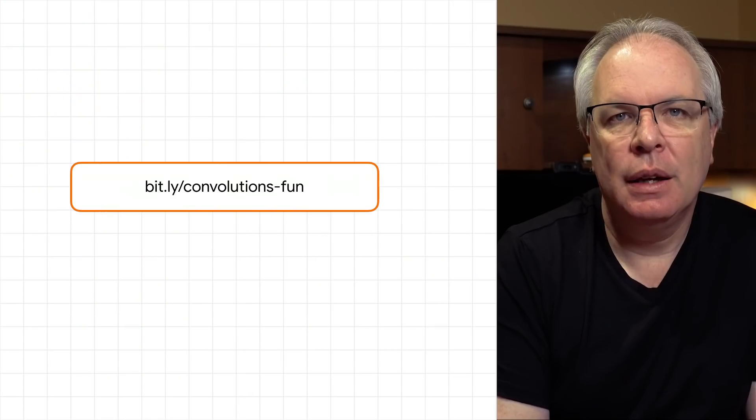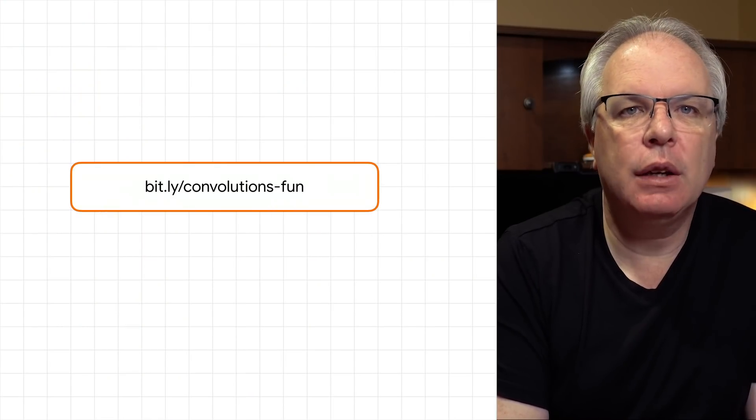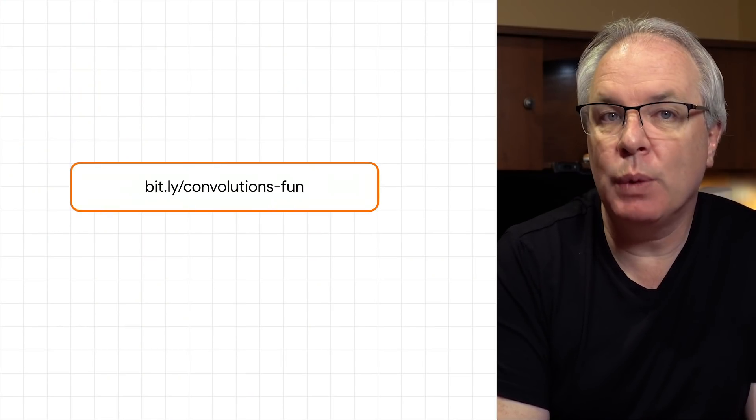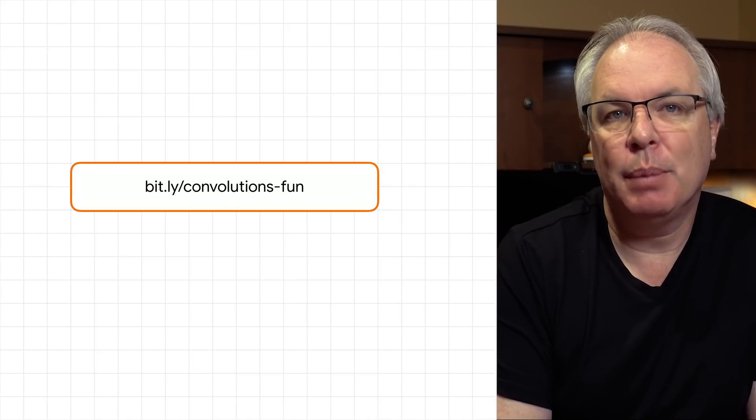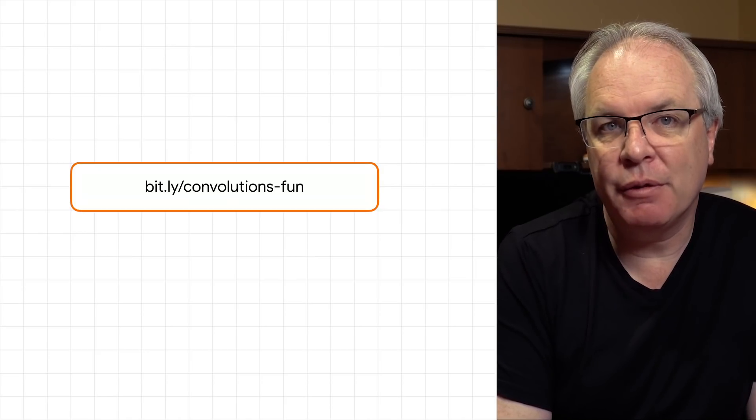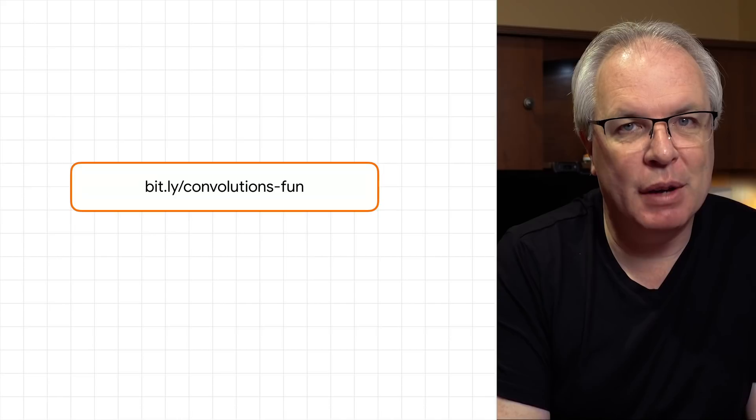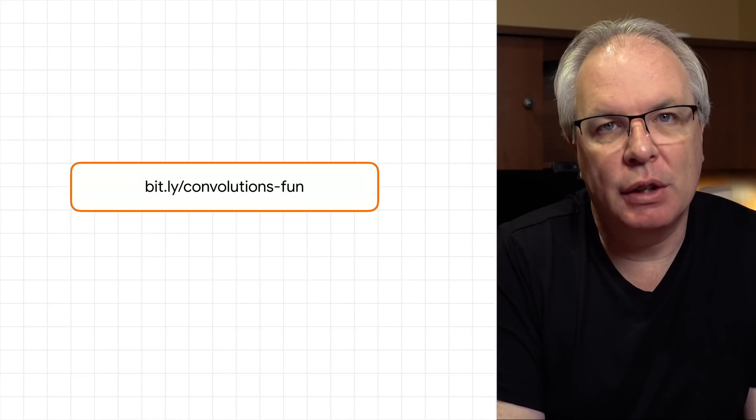OK, so now that we've seen what a convolution is, and how it works, as well as how it can go hand-in-hand with pooling, let's take some time to see how to code for them. Here's the URL of a colab containing code that can filter an image, as well as do pooling. You can play with the filter parameters, or try different effects, or just use the ones that I've provided. Pause the video now and give it a try.